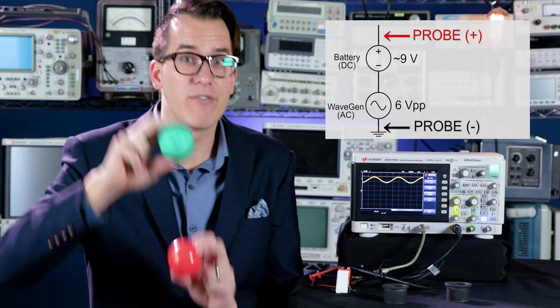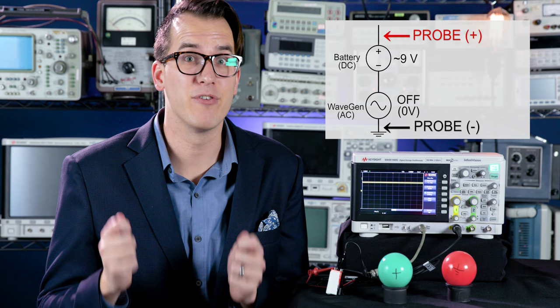And that's why your scope or DMM probes have two terminals, so they can compare the difference between the two.